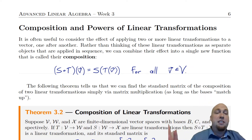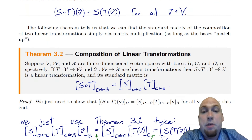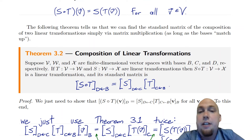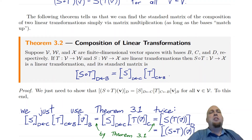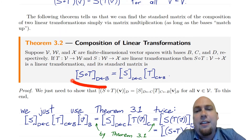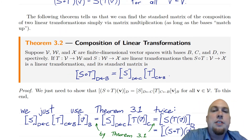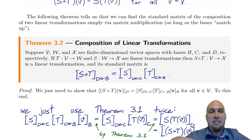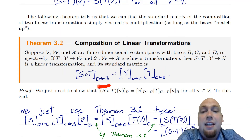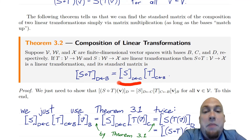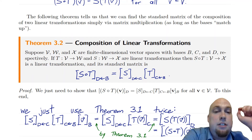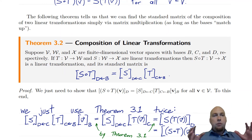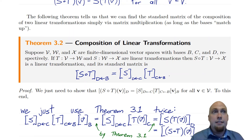You can define composition for arbitrary functions acting on arbitrary sets, but when we're working in vector spaces with linear transformations, something really nice happens. We just talked about standard matrices last lecture, and it's natural to ask: what can you say about the standard matrix of the composition of two linear transformations? What this theorem says is that the standard matrix of a composite linear transformation is just the matrix product of the individual standard matrices. In other words, composition is modeled by matrix multiplication — and that's exactly why matrix multiplication is defined the way that it is.